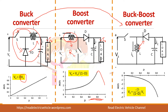For the buck-boost converter, this converter acts as a buck converter for a duty cycle below 0.5, and after 0.5 the graph changes drastically. V0 is equal to minus D divided by (1 minus D). The negative sign indicates that this converter produces an output voltage with opposite polarity to the input voltage — the output is inverted, so you get a negative output where the input is positive.